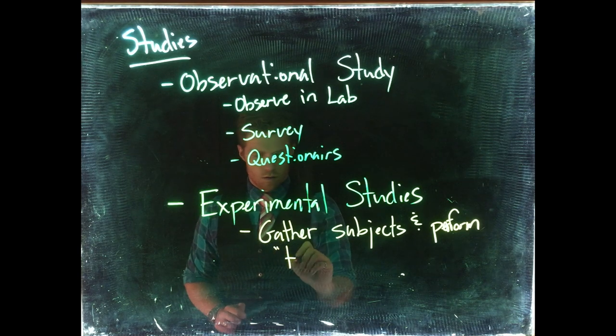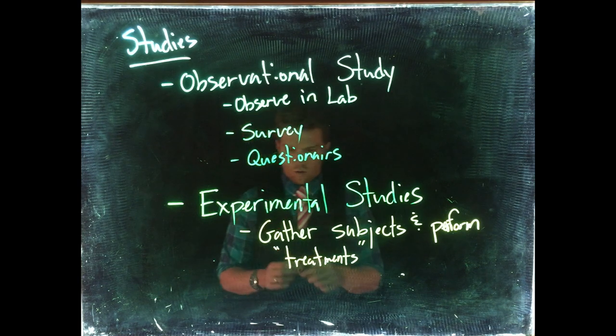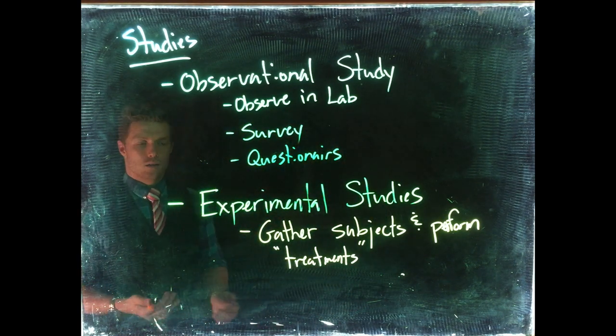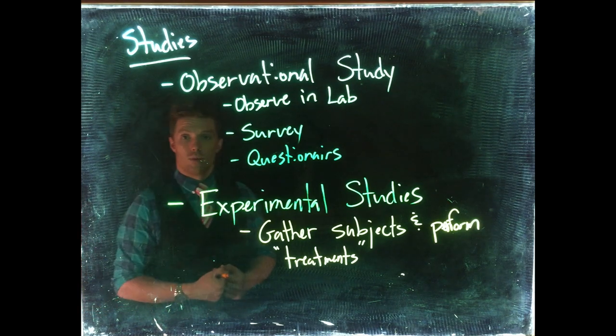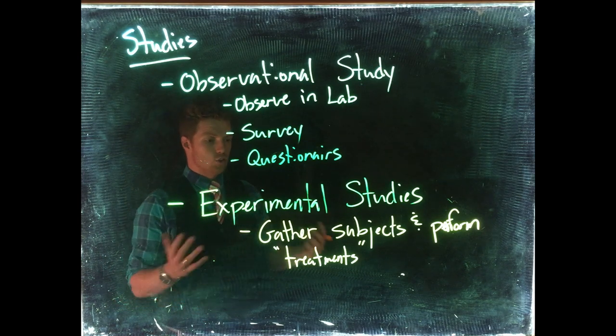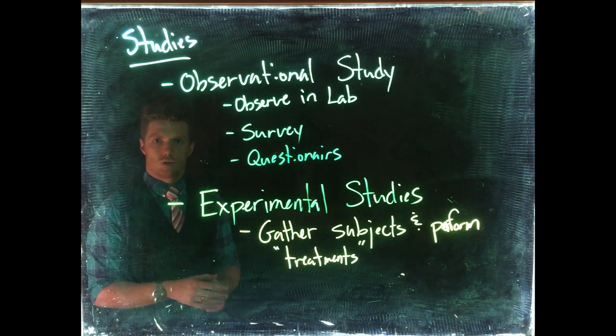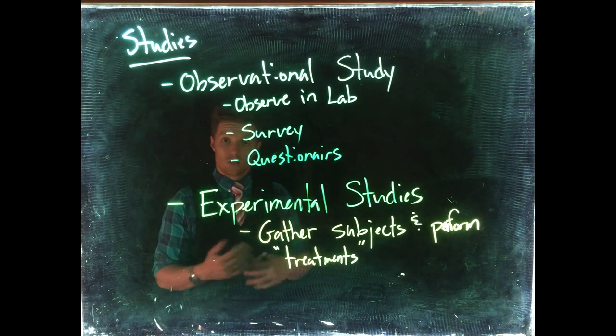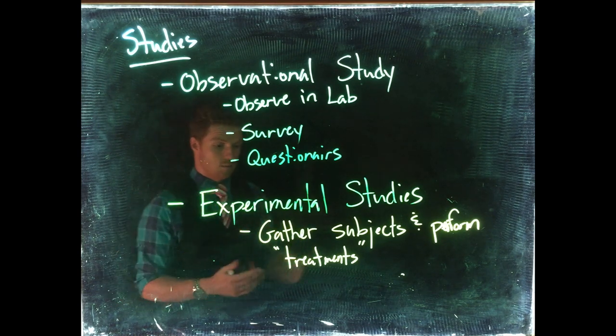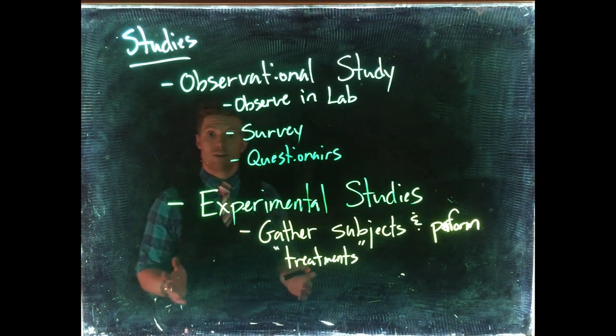We do this all the time in pharmaceutical studies where we gather a large sample from the population we're interested in. Maybe we're interested in giving a new drug to anybody who lives in North America. We'll get a good representative sample of our population, and then we split them into two groups, randomly dividing them.